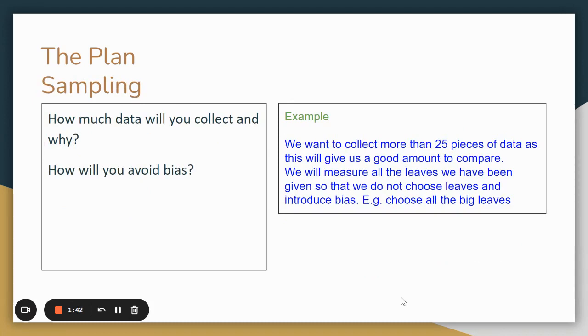Next we need to talk about the sampling method. How much data do we want and why, and how will we avoid bias or something that makes it not truthful. We want to collect more than 25 pieces of data as this will give us a good amount to compare.